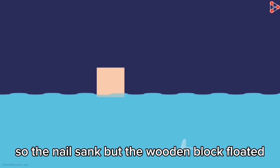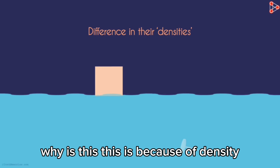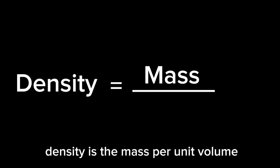The nail sank but the wooden block floated. Why is this? This is because of density. In simple words, density is the mass per unit volume. Now what if you want to calculate for density? How can you do that?